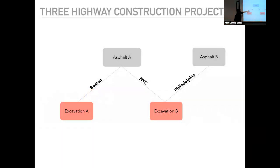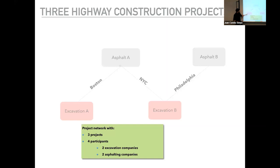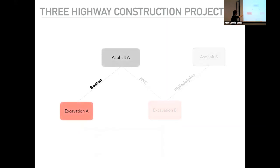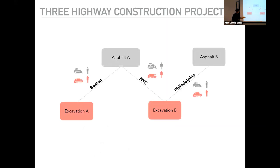Let me give you an illustrative example. We have a project network with three projects — think of three highway construction projects: one in Boston, one in New York City, and one in Philadelphia. There are four participants: two excavation companies and two asphalt companies — a very simple network. The projects are the arcs, the participants are the nodes, and you can see how each of them allocates machinery and workers across the projects.